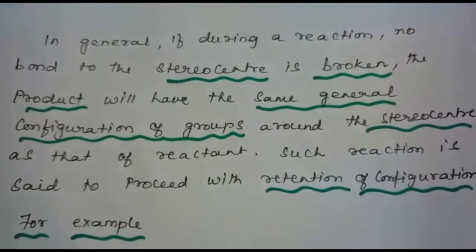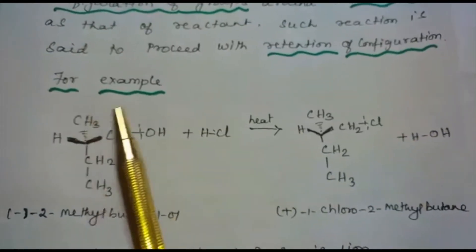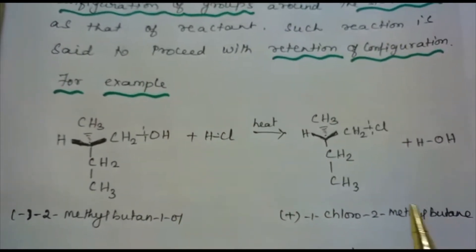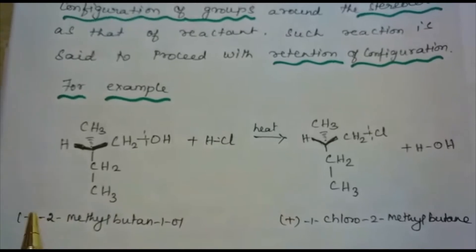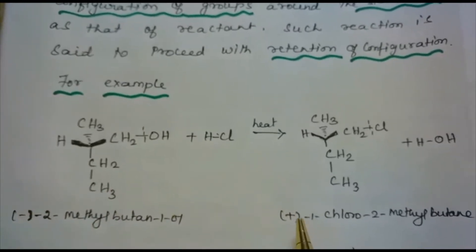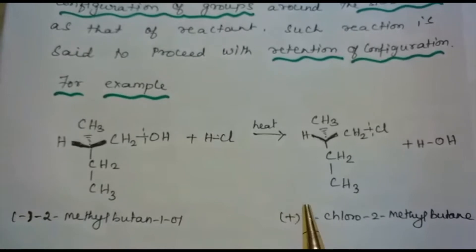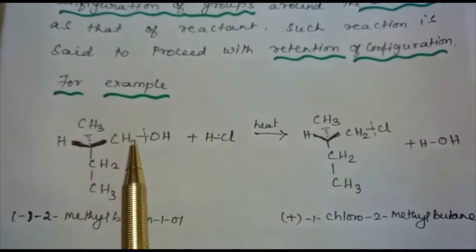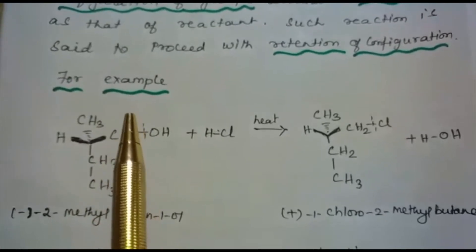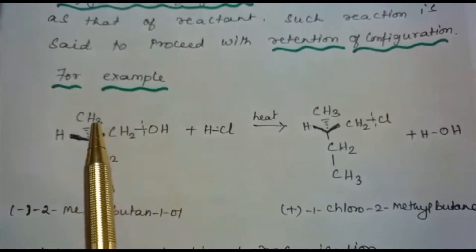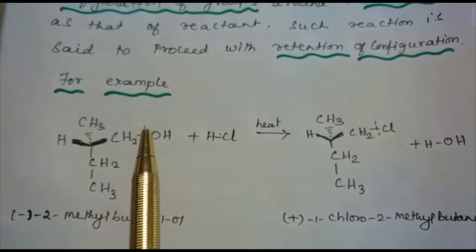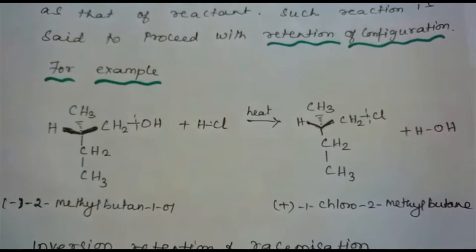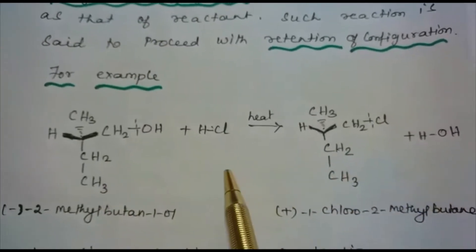An example of retention of configuration: consider the conversion of 2-methylbutanol to 1-chloro-2-methylbutane. Here, the minus sign represents levorotation and the plus sign represents dextrorotation of plane polarized light. The preservation of integrity is maintained — that is, retention of configuration is maintained. The OH group is replaced by Cl, but the arrangement of groups around the stereocenter remains the same. This is an example of retention of configuration.